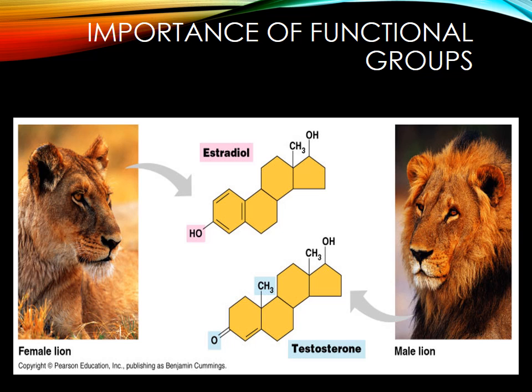Just how important are these different functional groups? If you take a look at these two hormones that occur in pretty much every vertebrate's body — estradiol or estrogen and testosterone — these only differ in functional groups. The molecule is basically the same, but two different functional groups cause a huge influence on the anatomy and physiology in males and females. So we're talking about huge anatomy and development changes that occur in male and female species based on just two functional groups.